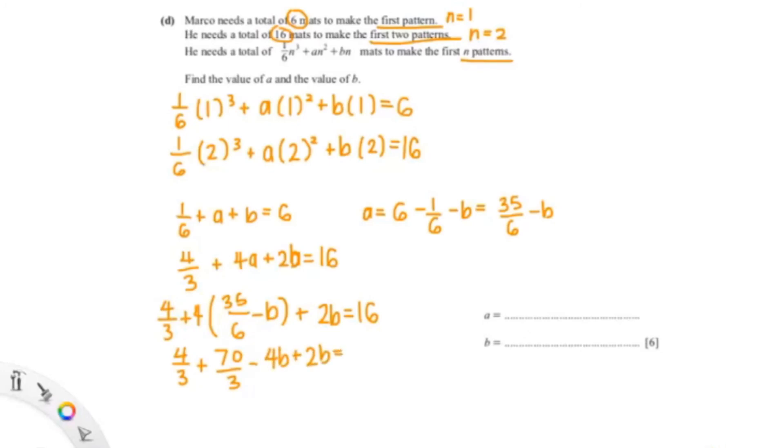Okay so now I'm just gonna find b straight away, so that'll be (16 minus 4/3 minus 70/3) over minus 2. Then you'll just put all these values into the calculator. Make sure you put it in properly so you don't get another value.